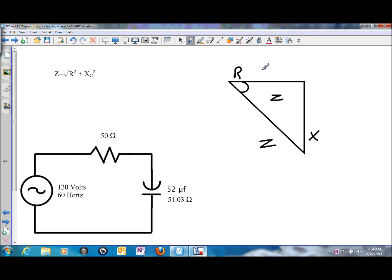Looking at the values, we can place them in their appropriate spots. We have 50 ohms of resistance on the adjacent side of the triangle, and we have 51.03 ohms of capacitive reactance. Then we can take those values and use Pythagorean's theorem to solve for that.